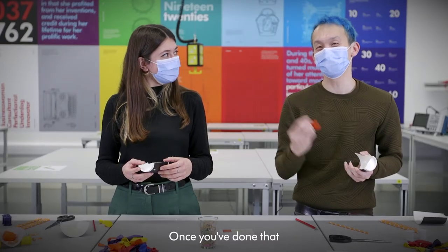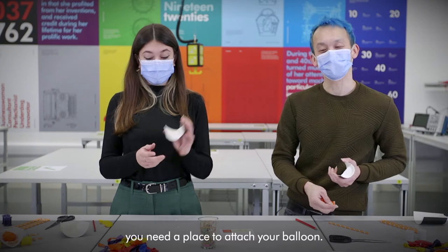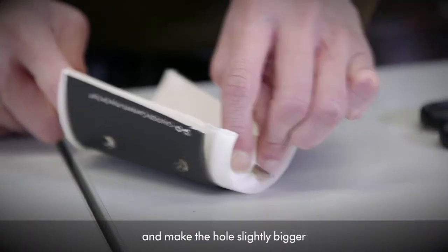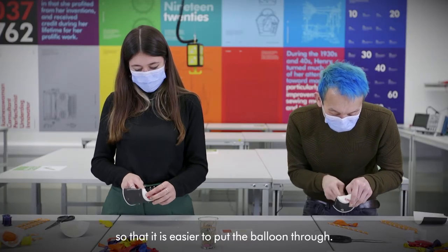Once you've done that, you need a place to attach the balloon. You need a hole at the back of the cup. Take the pencil and make the hole slightly bigger so that it's easier to put the balloon through.